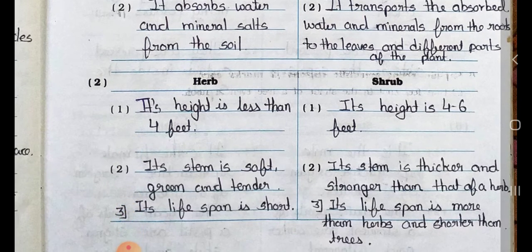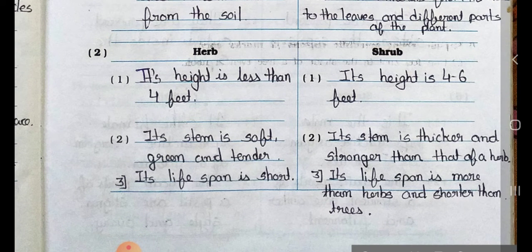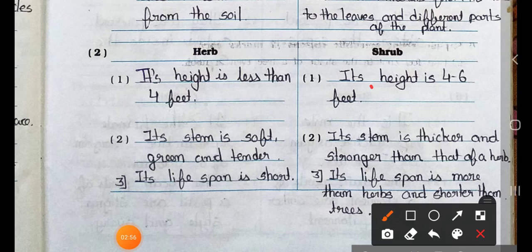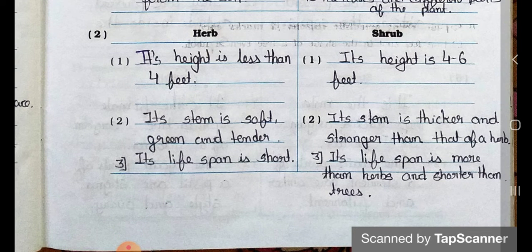Question number 2: Distinguish between herbs and shrubs. Point 1: The height of a herb is less than 4 feet, and the height of a shrub is 4 to 6 feet. Point 2: The stem of a herb is soft, green and tender, and the stem of a shrub is thicker and stronger than that of a herb. Point 3: The lifespan of a herb is short, and the lifespan of a shrub is more than a herb but shorter than trees.